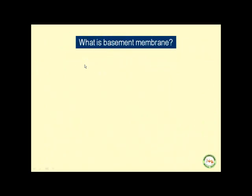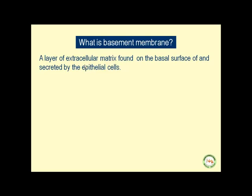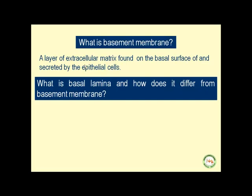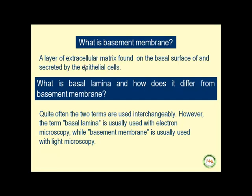Before going further, let us review some basic histology facts that are relevant to our discussion and are surprisingly a source of confusion for some students. What is basement membrane? It is a layer of extracellular matrix found on the basal surface of epithelial cells, secreted by those cells. What is basal lamina and how does it differ from basement membrane? These terms are often used interchangeably; however, basal lamina is typically used with electron microscopy, whereas basement membrane is used in light microscopy.